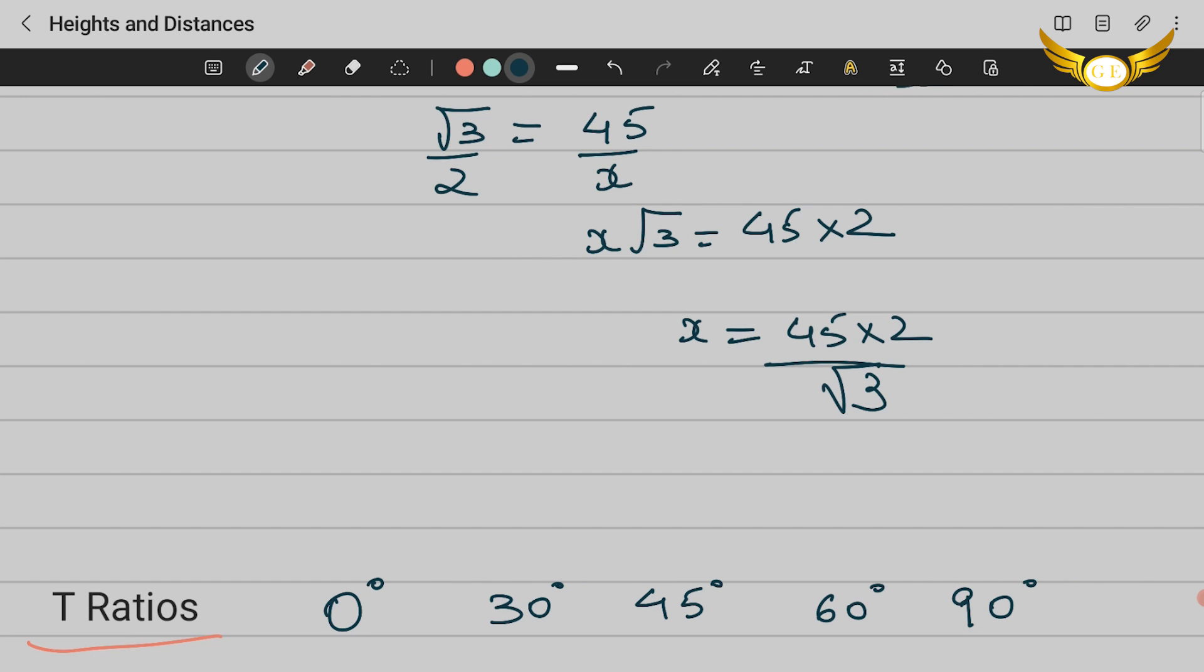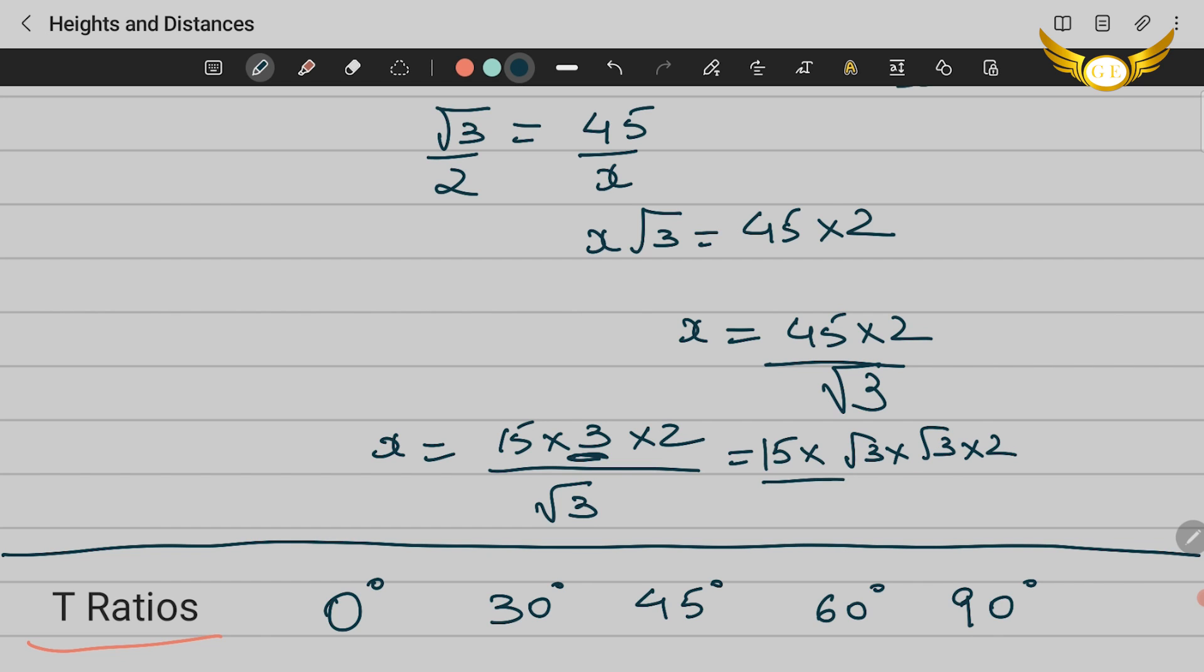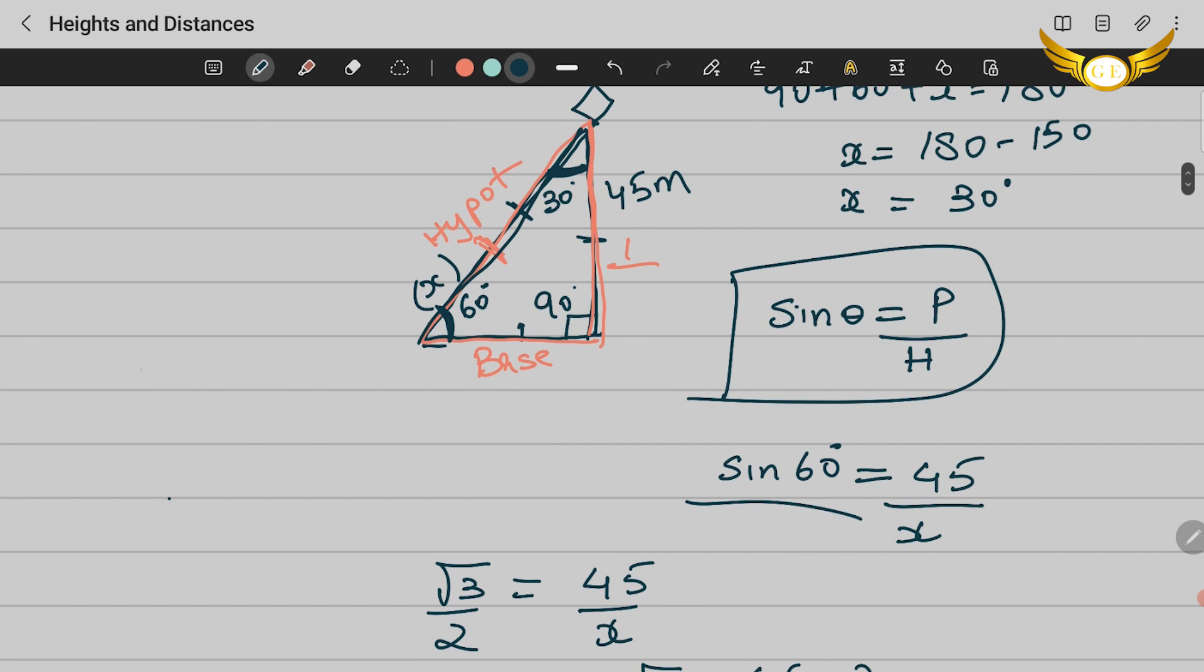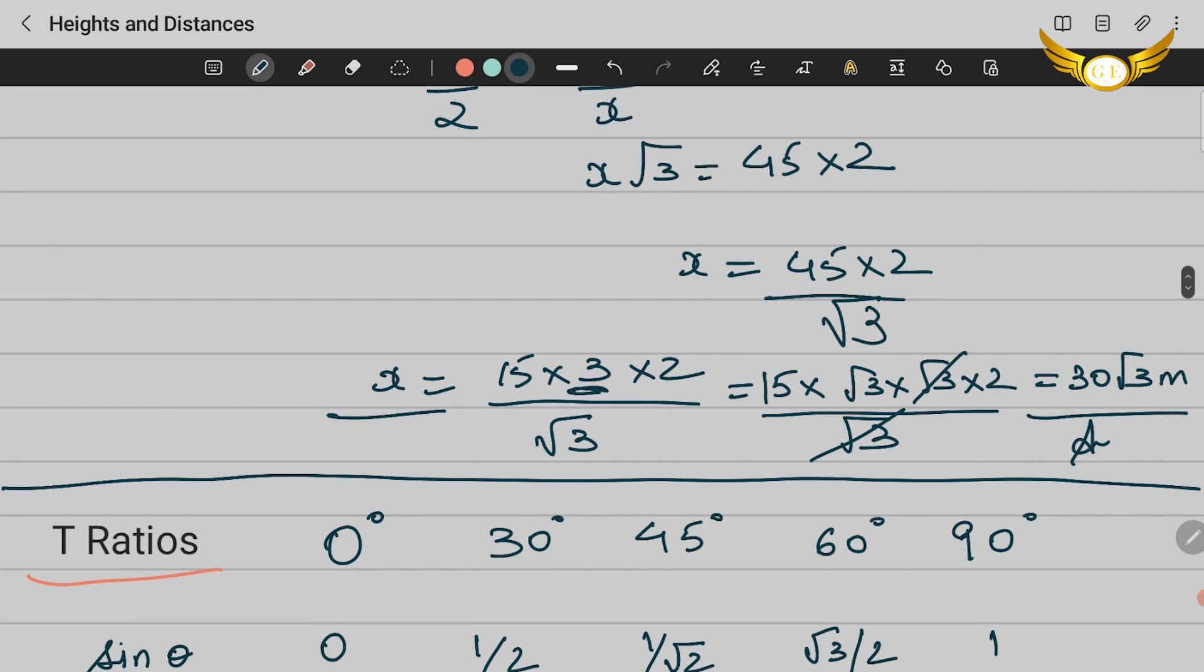Now to simplify this further, 45 can be written as 15×3, so x = 15×3×2/√3. Now we can write this as 15×√3×√3×2/√3, which will help us cancel the √3 and we get the answer as 30√3. So x is 30√3 meters. That means the length of the string is 30√3.